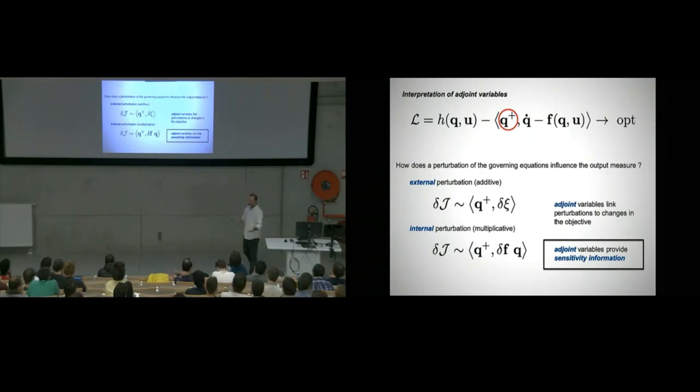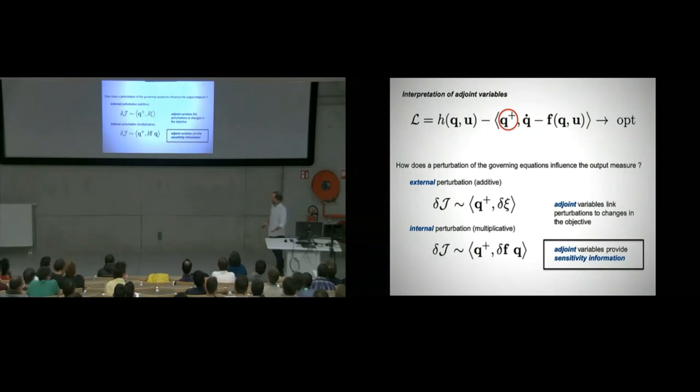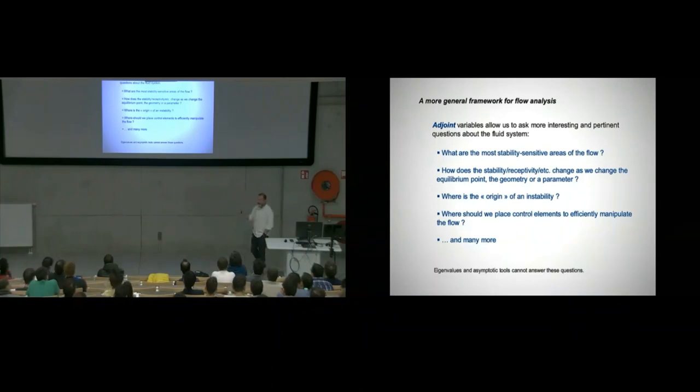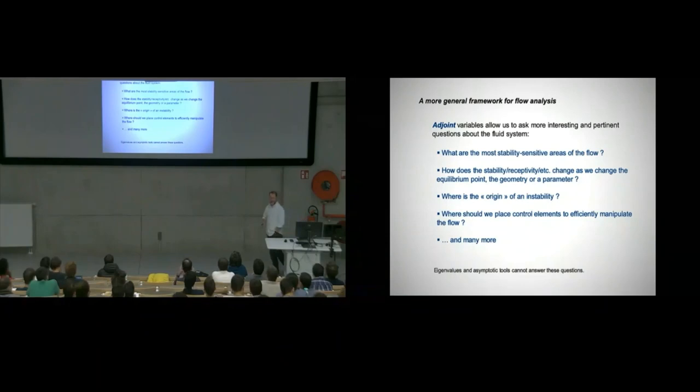Adjoint variables carry information by themselves. You cannot just use them for optimization. It's worth looking at them all by themselves in isolation and determine where in your flow do you have a sensitive area and where you don't. They carry information all by itself. With this additional information, with solving that additional equation for the adjoint, we get an enormous amount of information that we didn't have before that doesn't come out of the first equation.